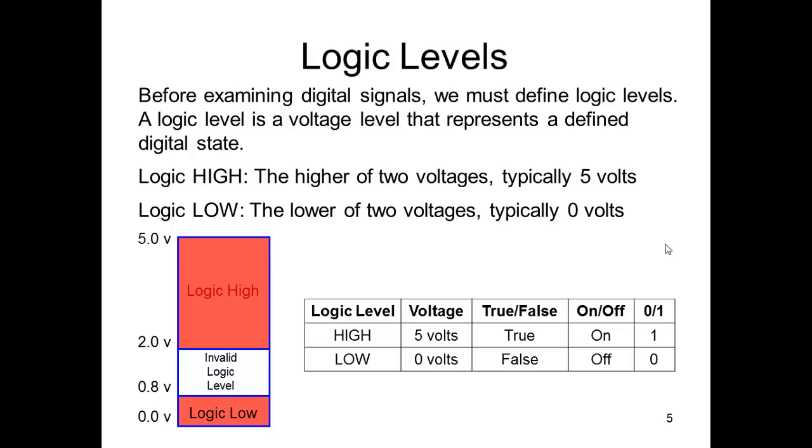On would be a digital one, off would be a digital zero, high and low. In this range, from 0.8 volts to about 2 volts, that's invalid and most digital circuits cannot interpret that.